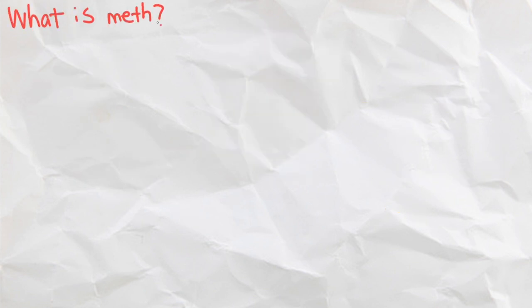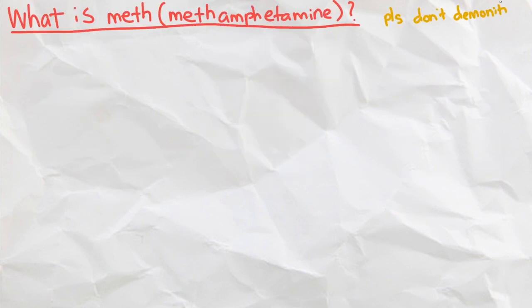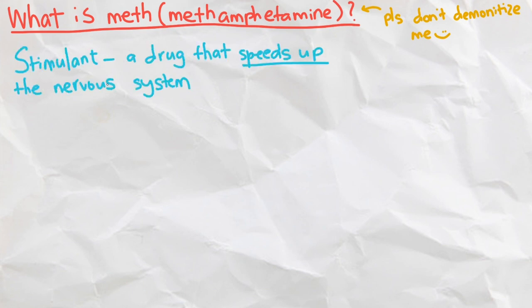Starting off, let's take a look at what methamphetamine, or meth, actually is. It is classified as a stimulant, a class of drugs that speeds up our brain activity in the nervous system, with the most popular stimulant being caffeine.